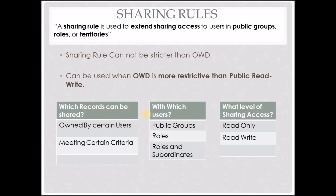So what are sharing rules? An admin can use a sharing rule to extend a user's record sharing access to public groups, different roles, and different territories. A sharing rule can be used when the organization-wide default is more restrictive than public read write. When organization-wide default is public read write, it already provides access to all users to view any other user's records. Hence, sharing rules are used when the OWD is either private or public read only.